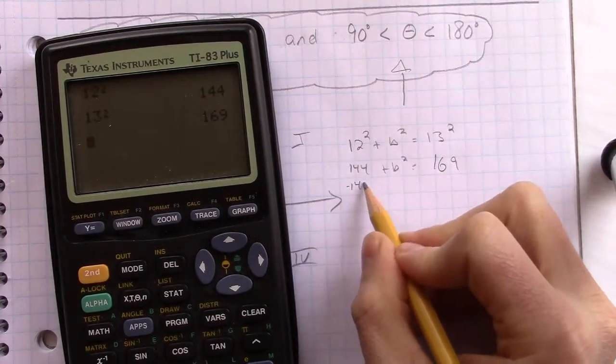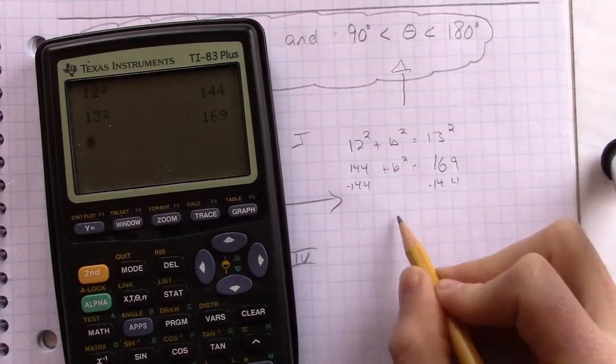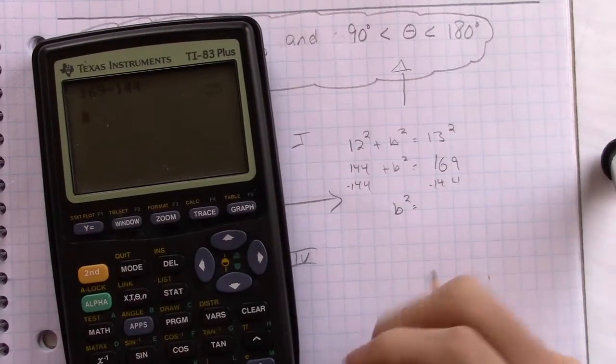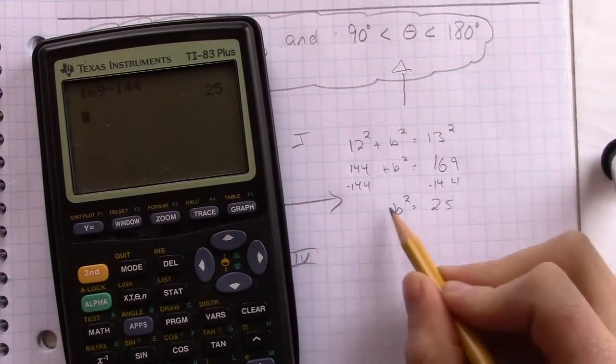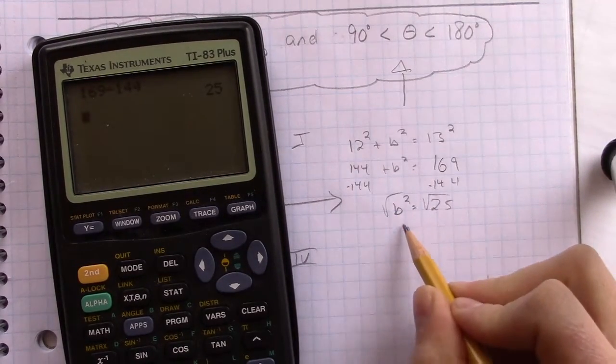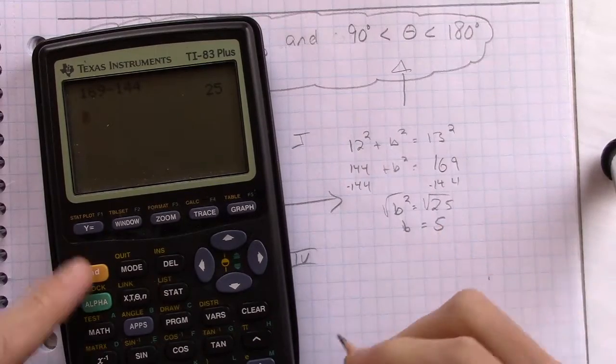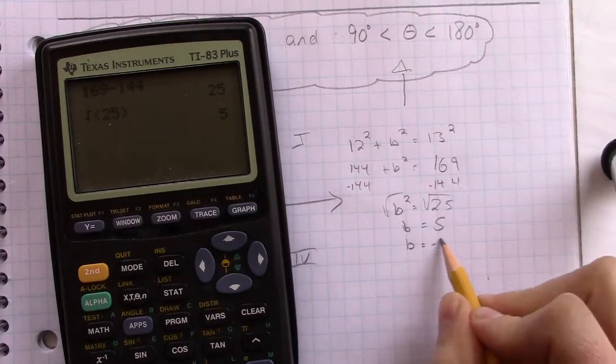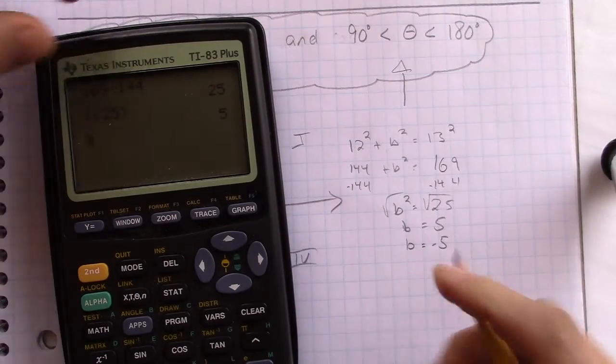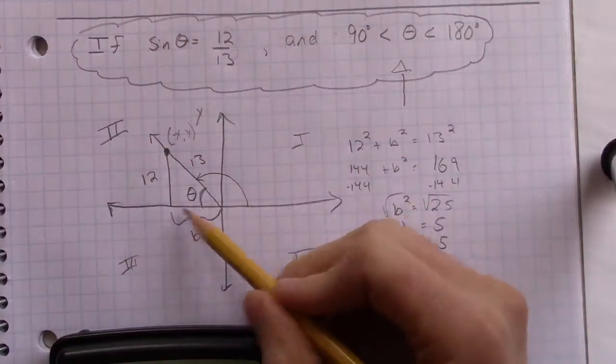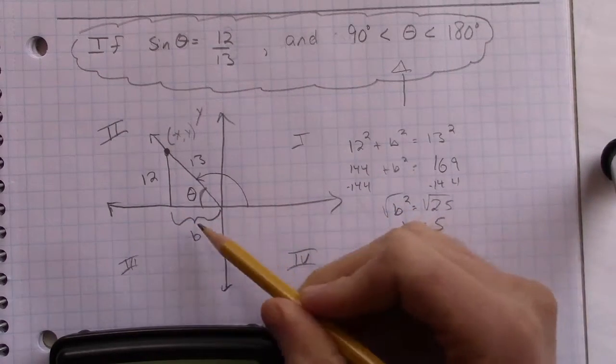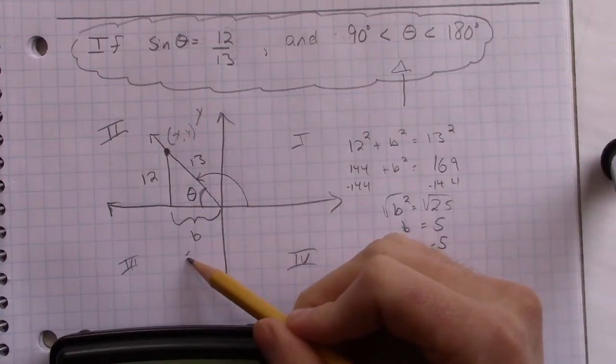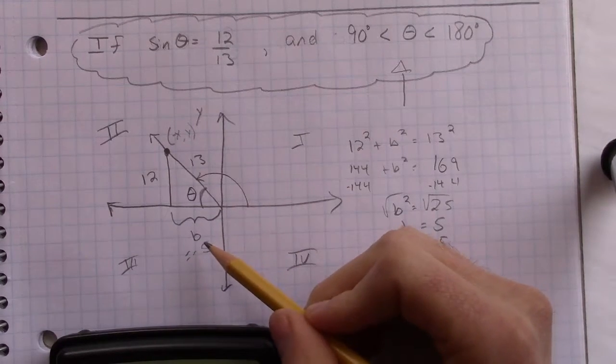Subtract 144 from both sides. It's just the Pythagorean theorem. Got to love that. b squared equals 1, let's see, 169 minus 144, that's 25. Square root of both sides. And you get b equals 5. In your calculator, if you do the square root of 25, you get 5. But remember, it's also b equals negative 5. And that actually matters here. Obviously, the distance or the absolute value here would be 5. But we need to think of this value as negative right now because we're in quadrant 2. And that's going to matter.